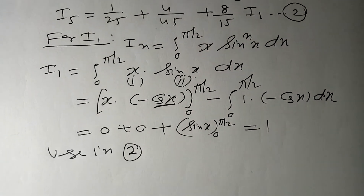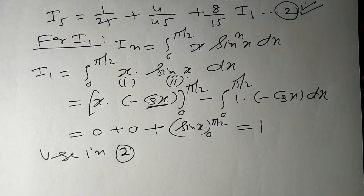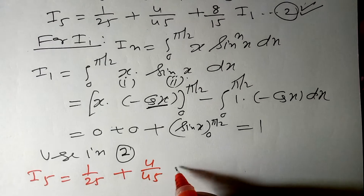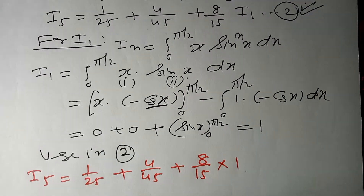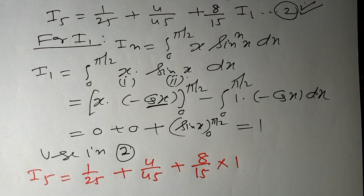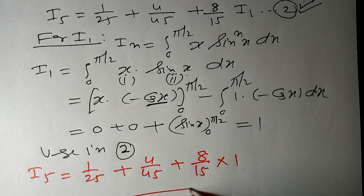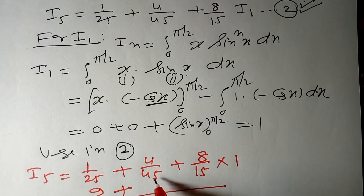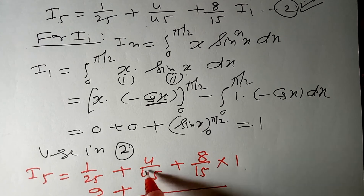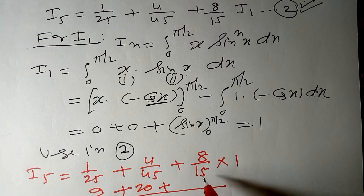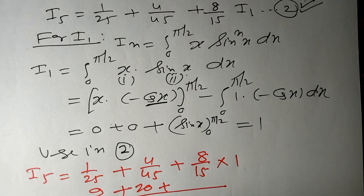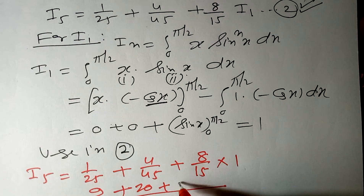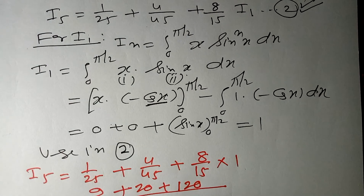Using equation 2 (the reduction formula result): I5 = 1/25 + 4/45 + (8/15)·I1 = 1/25 + 4/45 + 8/15 × 1. Taking LCM (which is 225): the numerator gives 9 + 20 + 120 = 149... wait, evaluating: 9/225 + 20/225 + 120/225. LCM is 225, giving approximately 149/225. The answer is evaluated.